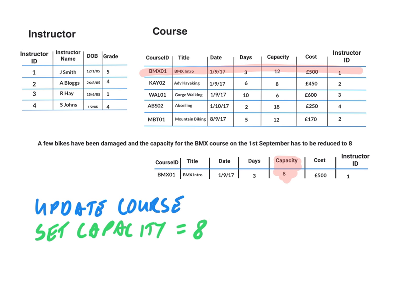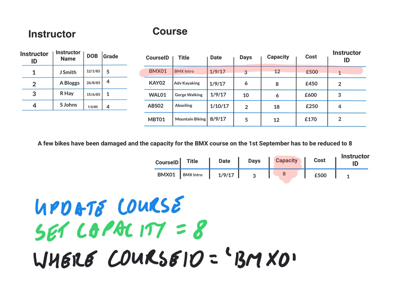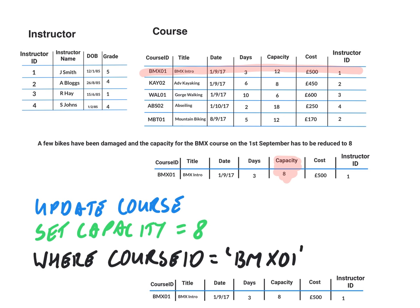We need to specify which record we want to update, and we use the WHERE keyword for that. Where the course ID equals BMX01. So if we then run that query, the result is that the capacity for that course is now changed to 8, as shown in the new record down here.